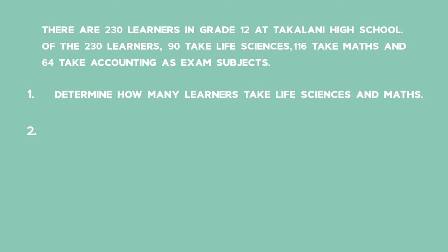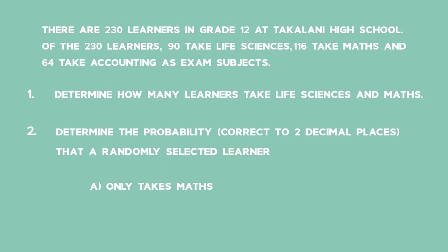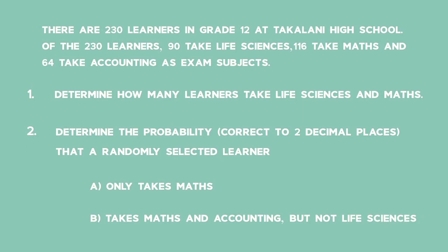Question 2: Determine the probability, correct to two decimal places, that firstly a randomly selected learner takes Maths only, and secondly that a randomly selected learner takes Maths and Accounting but not Life Sciences.